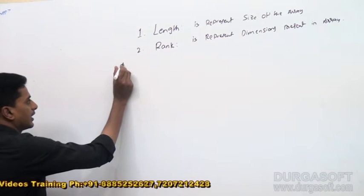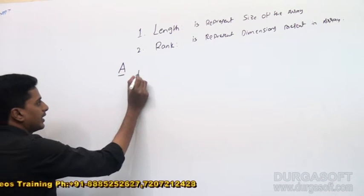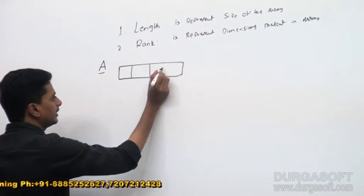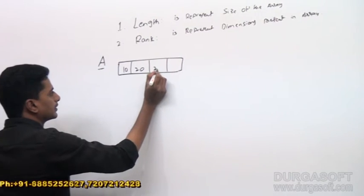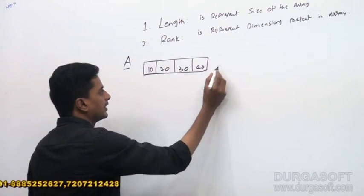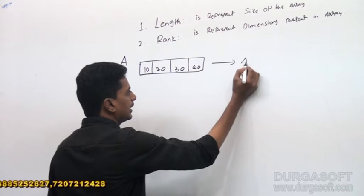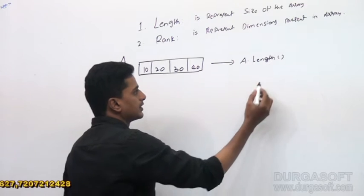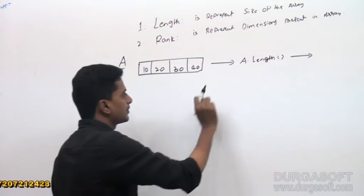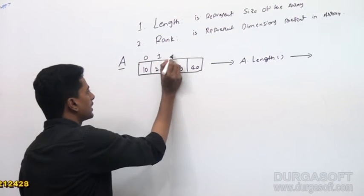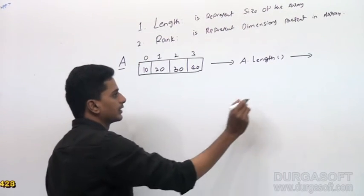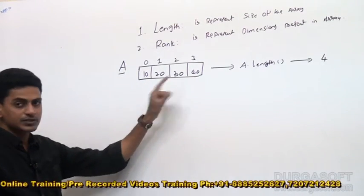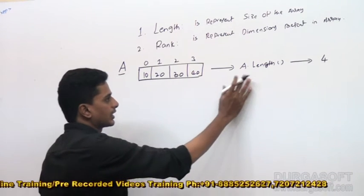Let us consider an array named A. If I do A.Length, length represents the size of the array. The number of elements in A are 4, so A.Length equals 4.